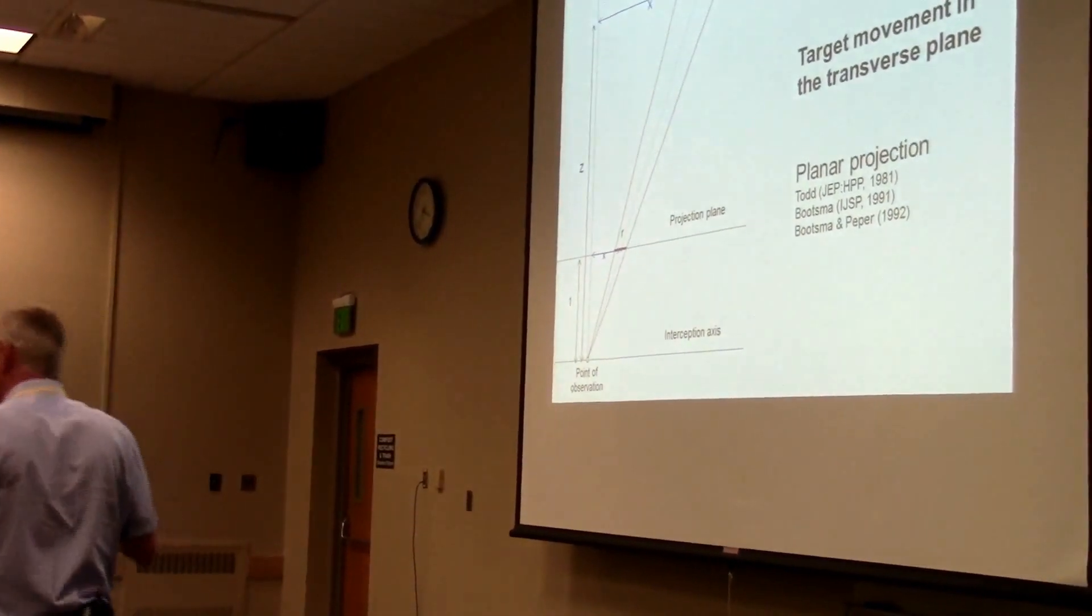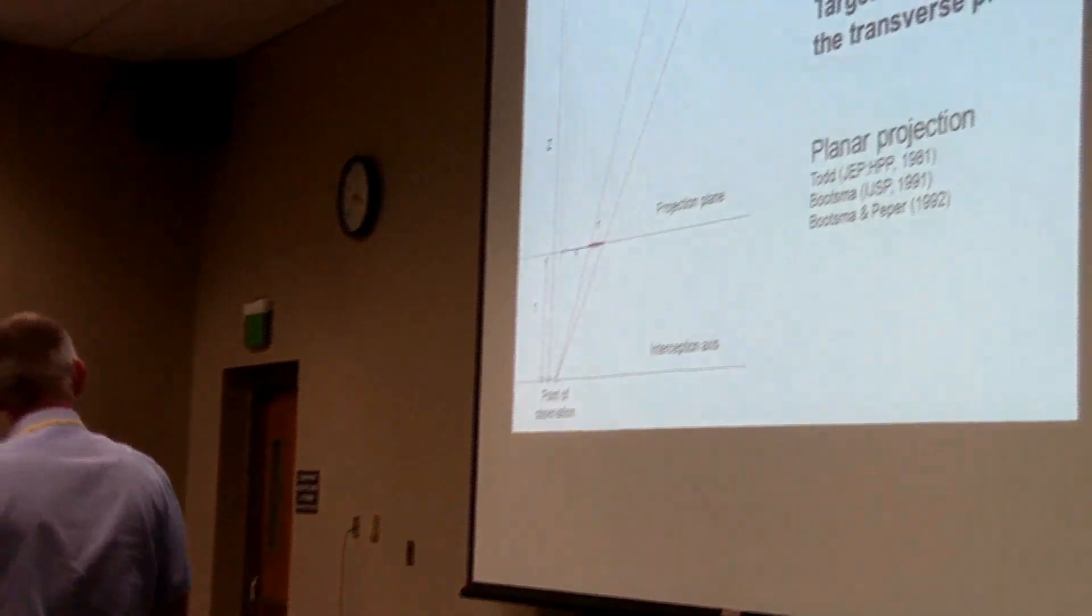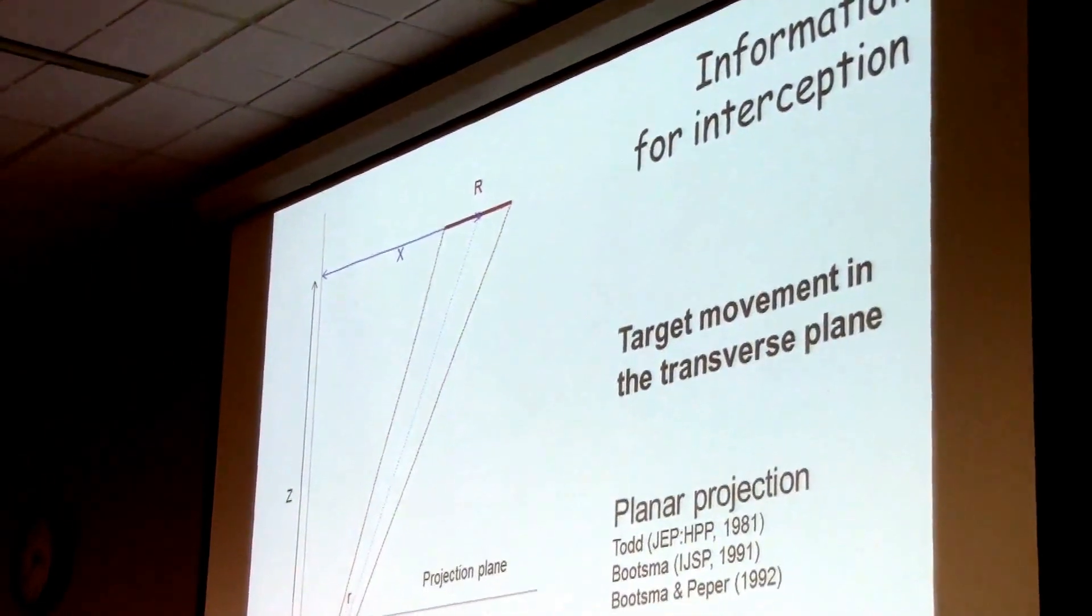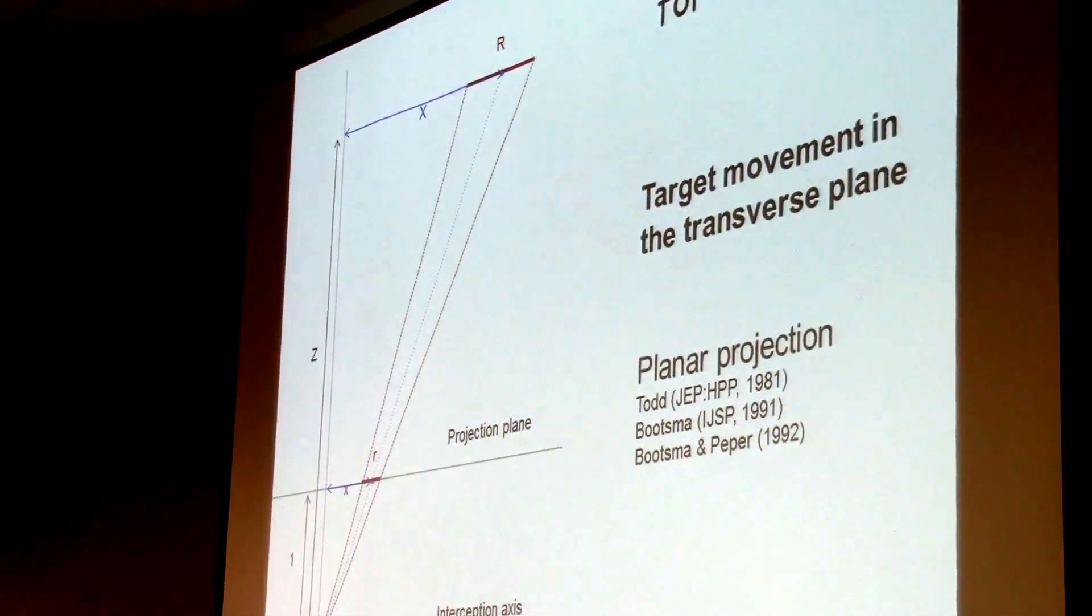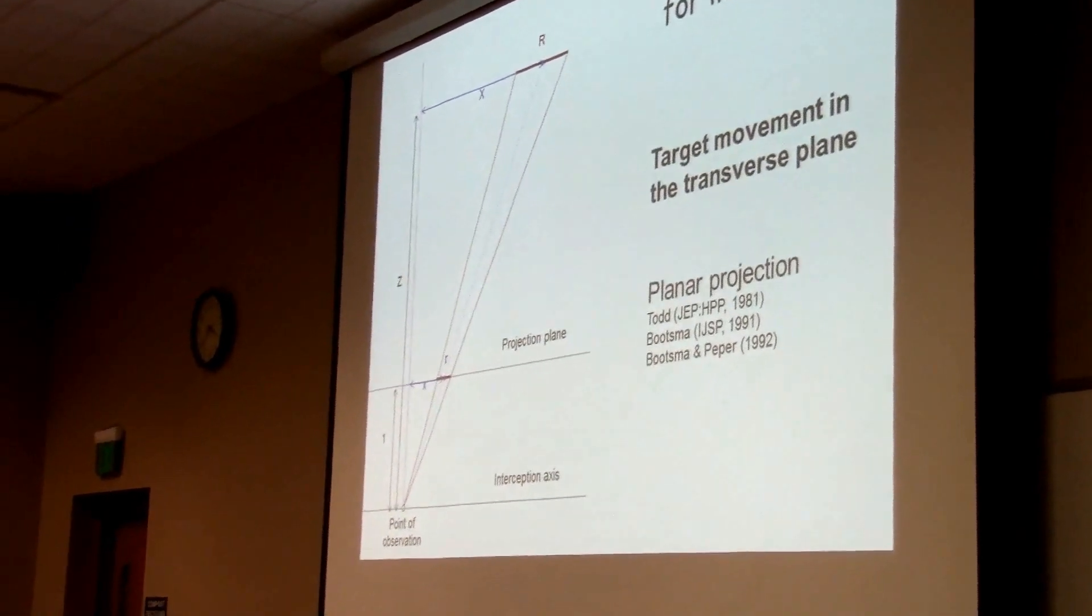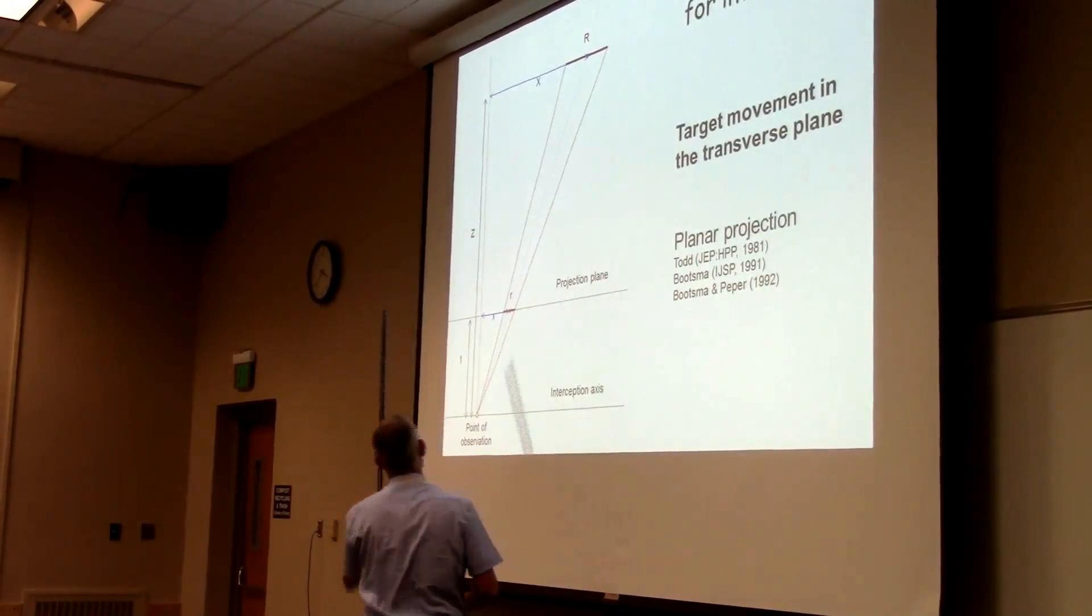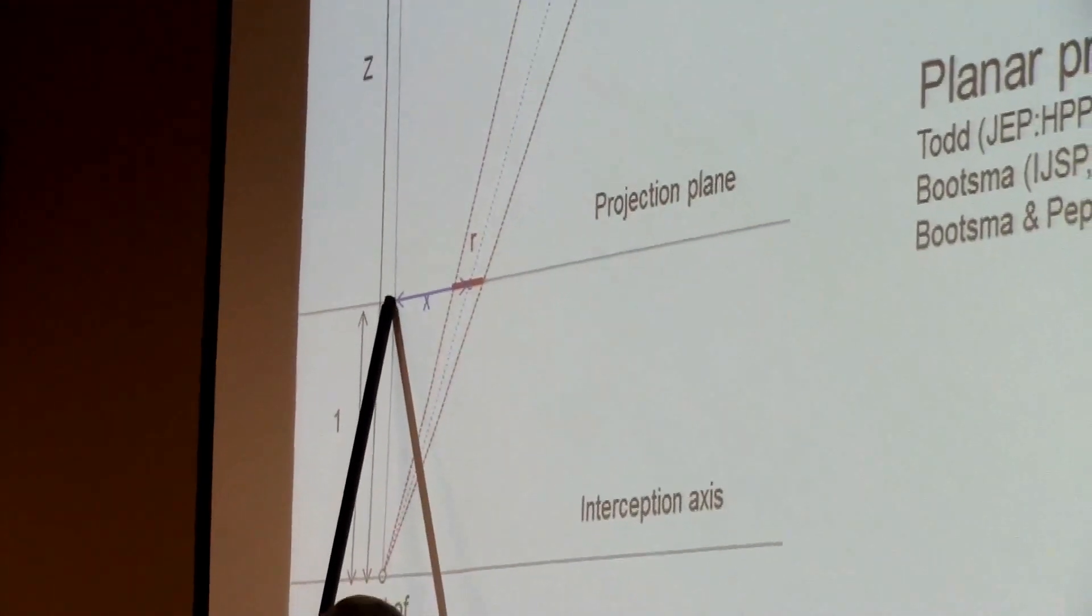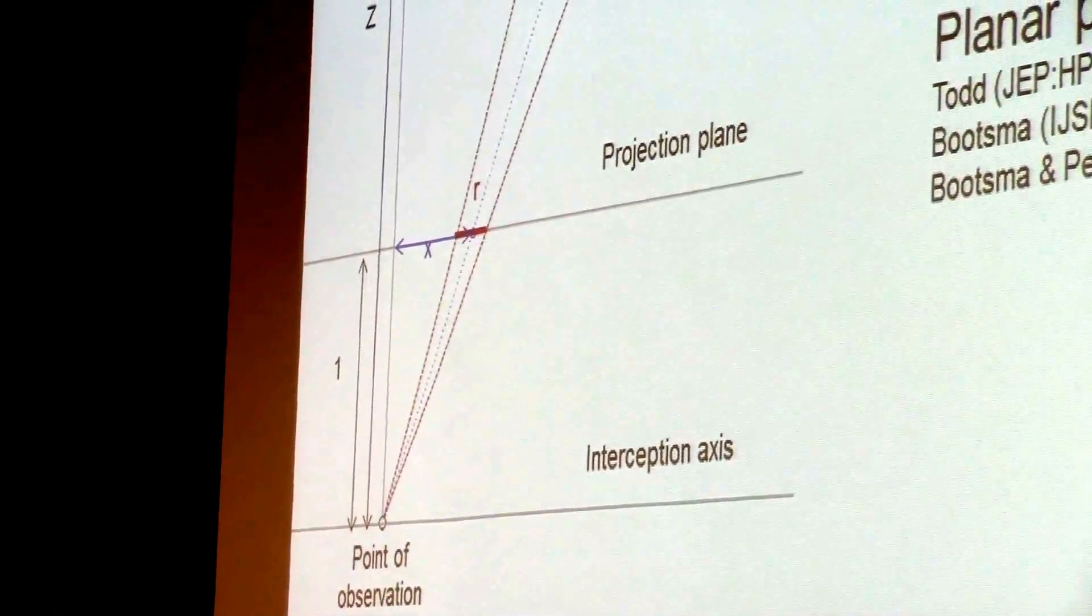So in order to understand what the information might be for interception, imagine a ball moving in a transversal plane to me. And we use a planar projection, because the mathematics are simpler than a polar projection. An object of size R at a depth of Z at a lateral distance X from the side gives rise to an optical size small r at a lateral optical distance small x. So in polar terms, that is theta. That's where this thing is relative to me. And this would be phi, the size of the optical projection.